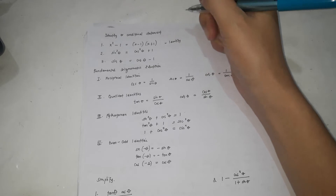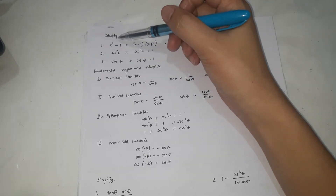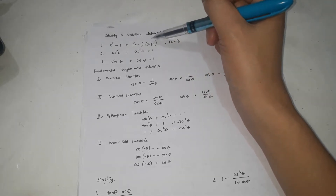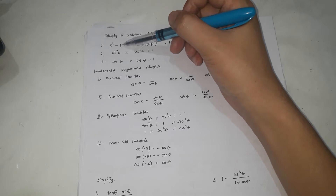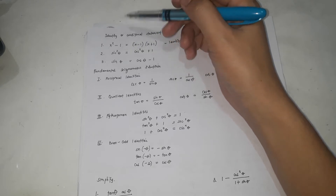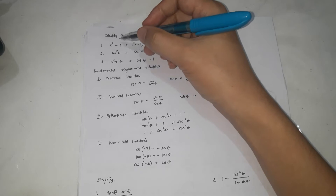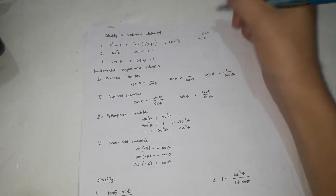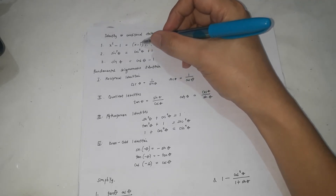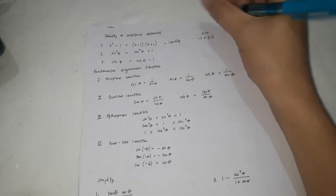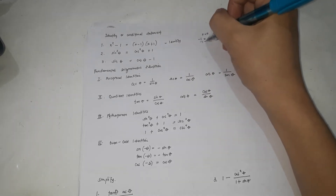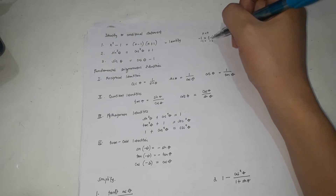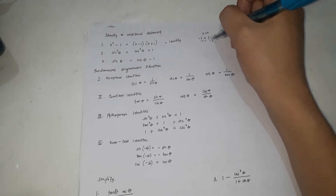Another way is to give a value of x and substitute it on both sides. For example, if x equals 0: on the left side, 0 squared minus 1 is negative 1. On the right side, (0 minus 1)(0 plus 1) is negative 1 times positive 1, which is also negative 1. They are equal. But be conscious — sometimes they are equal at specific values but not for all.